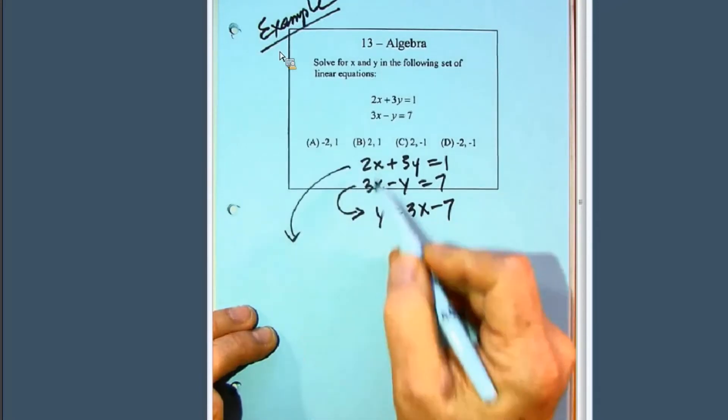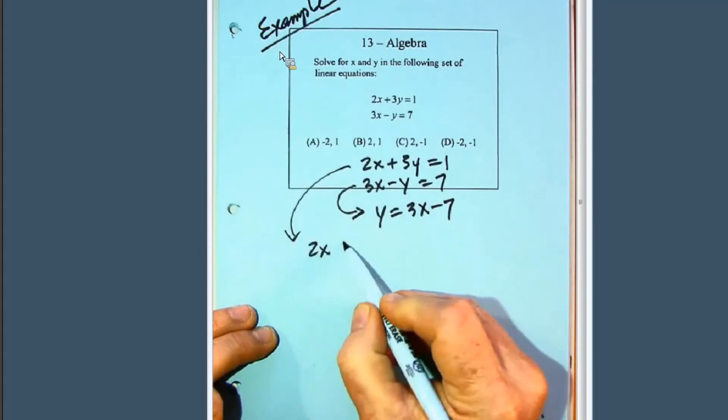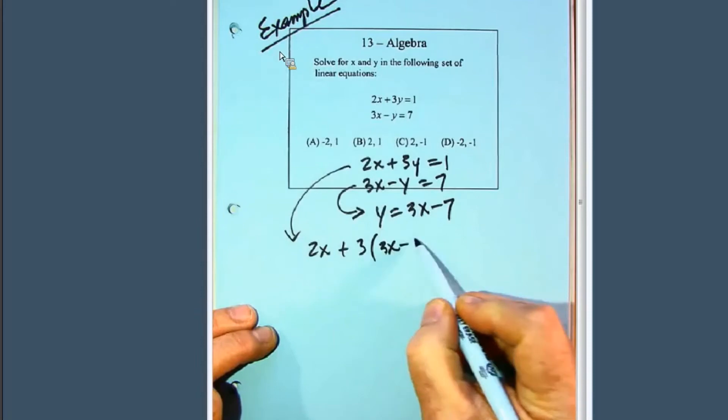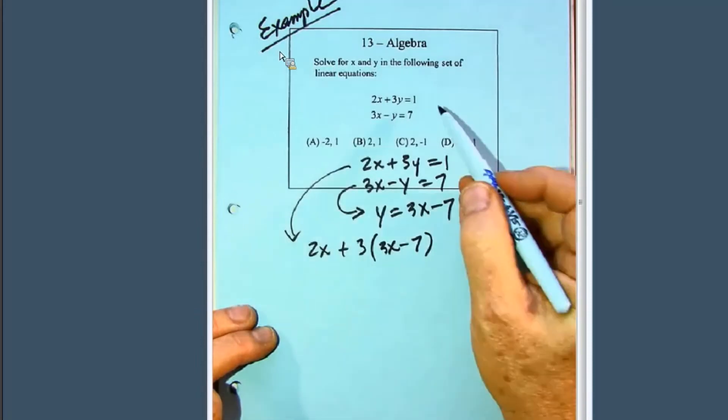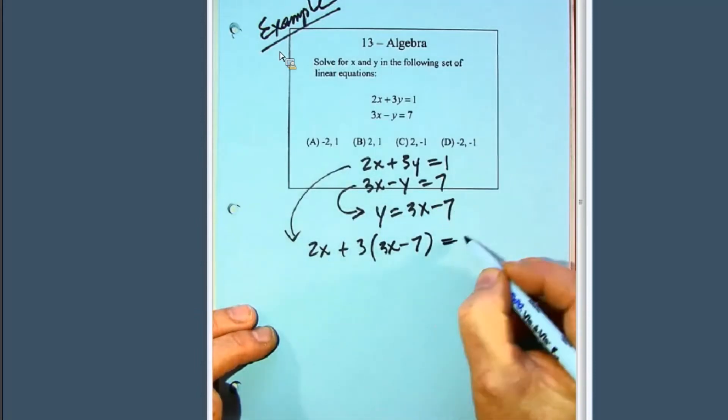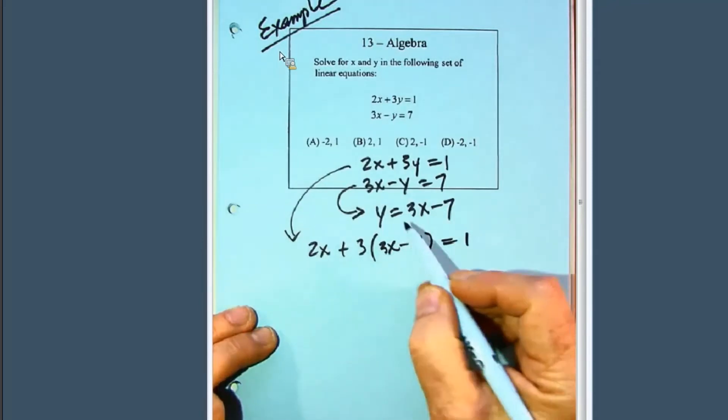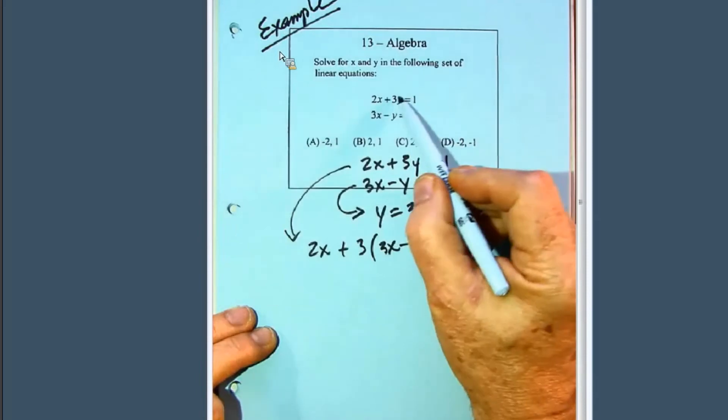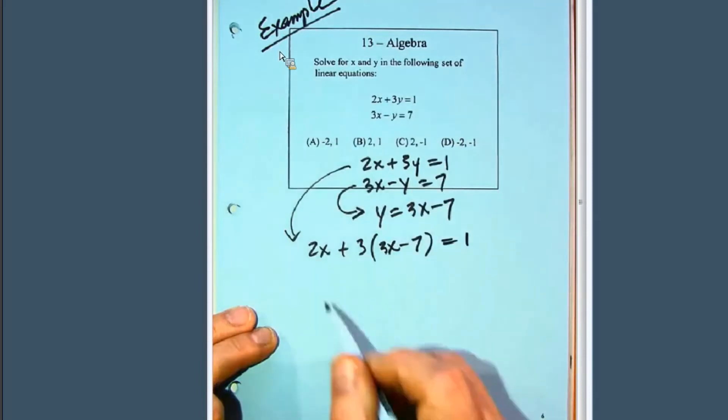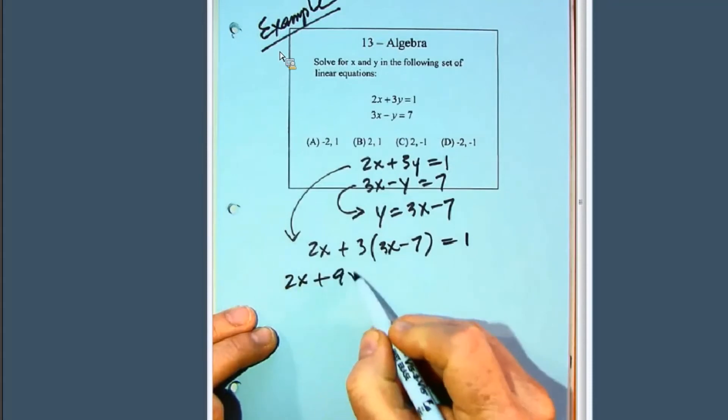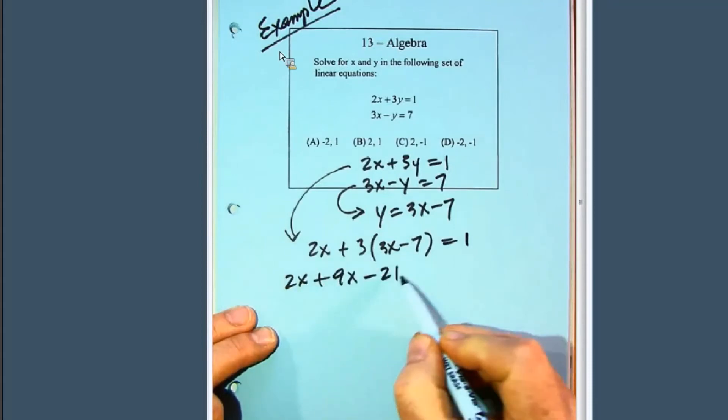Well, now what we can do is come down here, and we've got now 2x plus 3y. Well, y is now 3x minus 7, and that is equal to 1. So all we're doing is we're substituting this y into here. Now we can expand this: 2x plus 9x minus 21 equals 1.